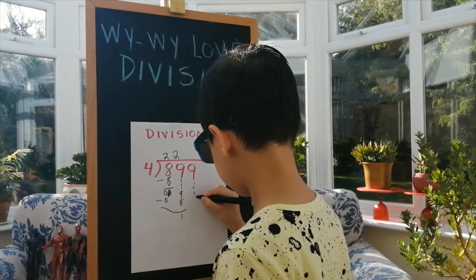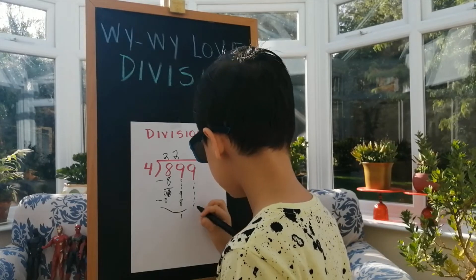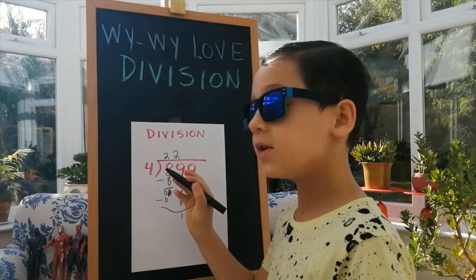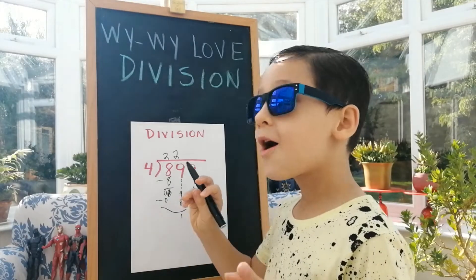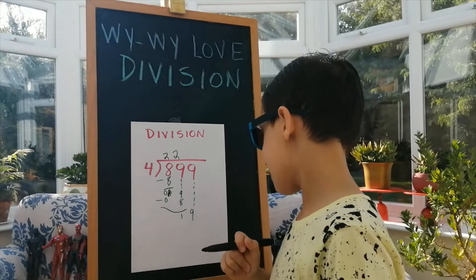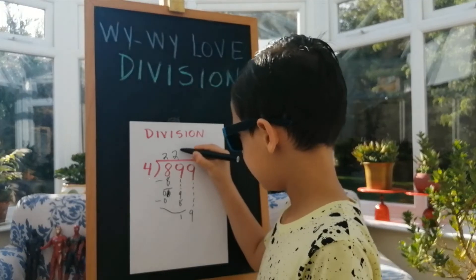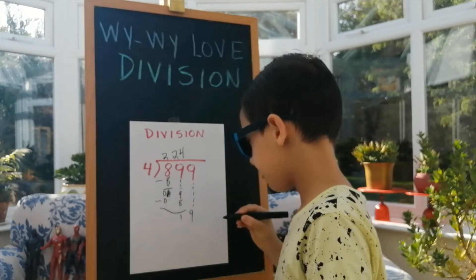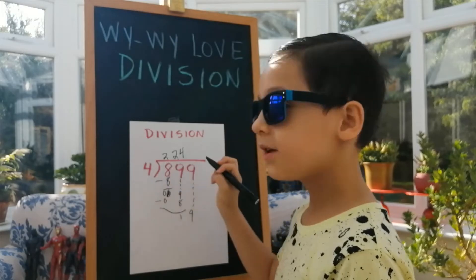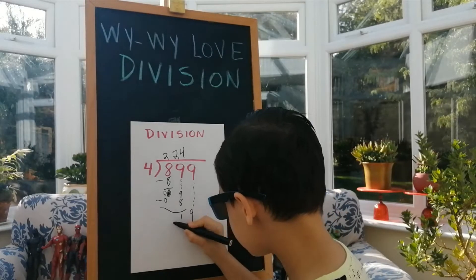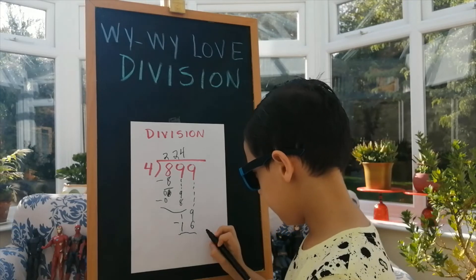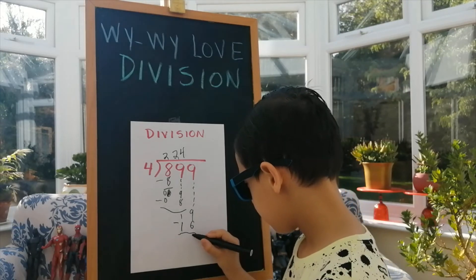Put the next number all the way down — 9, so it's 19. How many 4's are in 19? It's 4. 4 times 4 is 16. We put minus 16 equals 3.